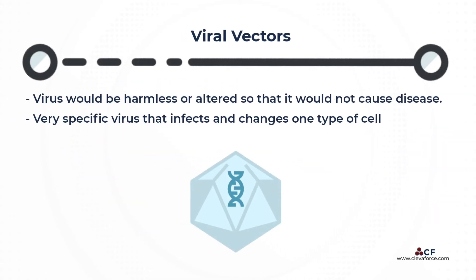A virus, for example, could be used as a vector. The virus would be rendered harmless or altered so it would not cause disease. It would then be injected with the genetic material, and the new genetic material would be introduced as it reproduced and infected the target cells.